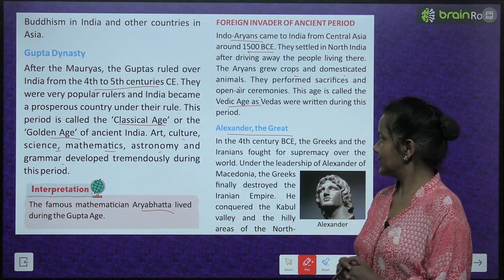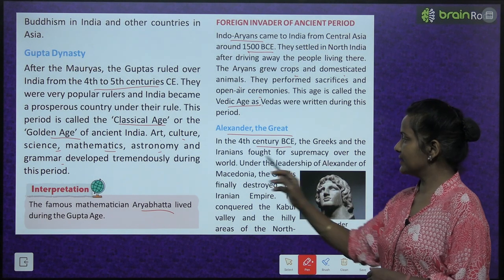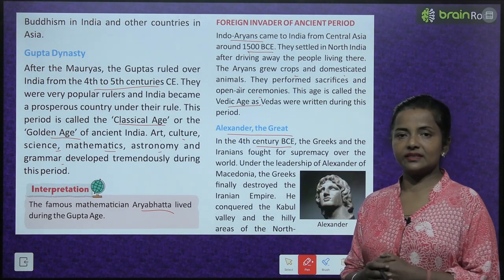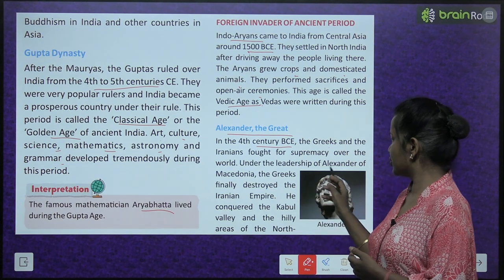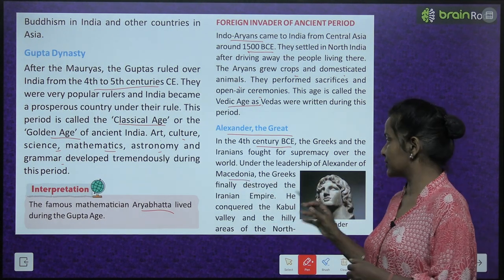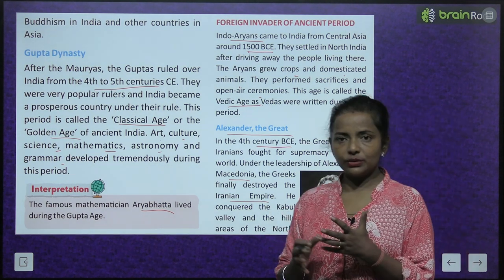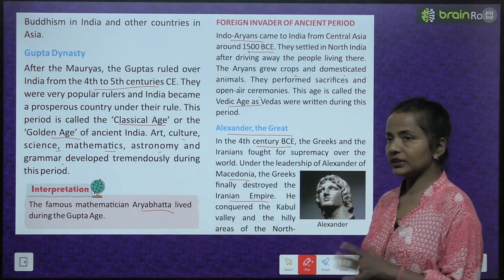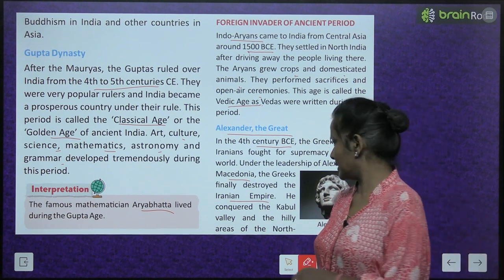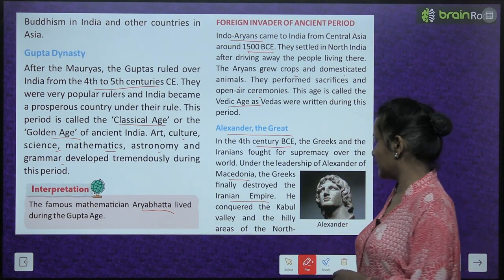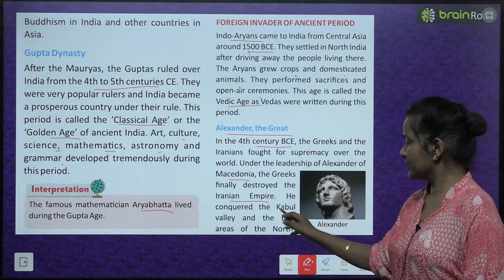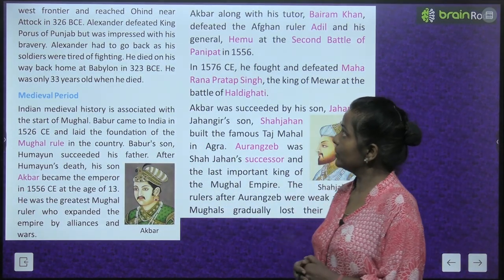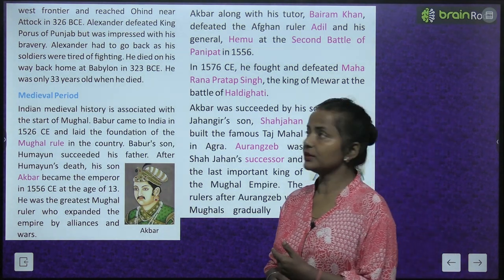Alexander the Great — in the 4th century BCE, the Greeks and the Iranians fought for supremacy over the world. Under the leadership of Alexander of Macedonia, the Greeks finally destroyed the Iranian Empire. He conquered the Kabul Valley and the hilly areas of the North West Frontier and reached Ohind near Attock in 326 BCE.